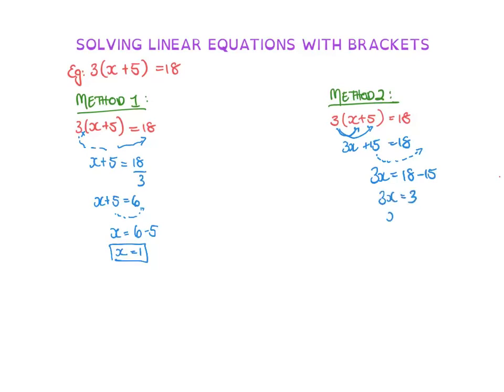So 3x equals 3. Now because this 3 is timesing, it will divide on the other side. So 3 divided by 3 equals 1. So both methods work. Whichever way you want to do it, that's fine. But sometimes it might be easier to do one way than the other.